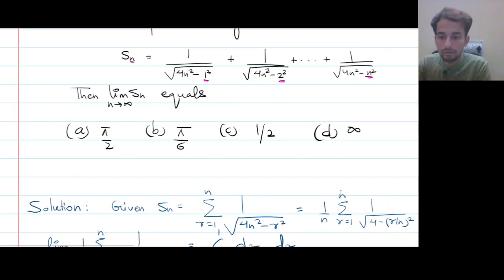So now, what I'm going to do is take this thing n square, this quantity, out of the square root. When it comes out of the square root, it will become 1/n, and this will be 4 minus r/n square.